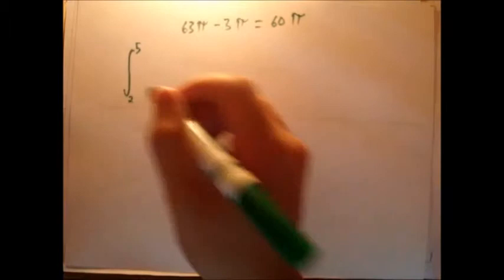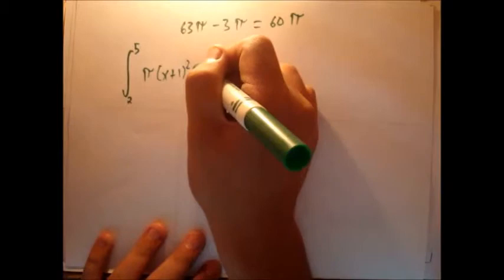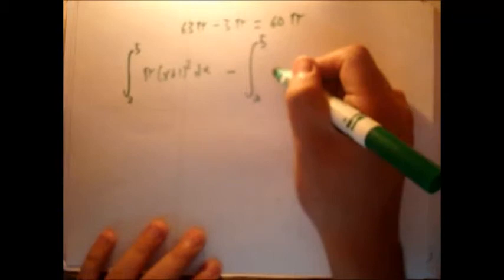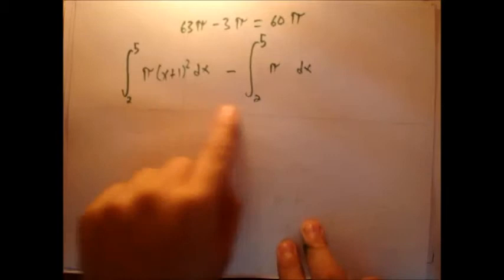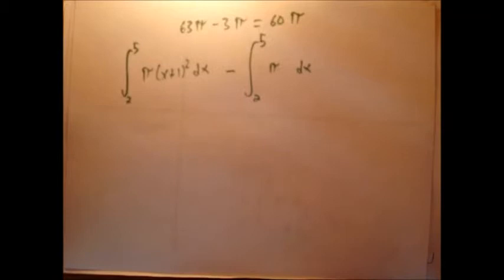x plus 1, we have square of the radius squared dx, right? And then we have to subtract, same intervals, just pi dx. Well remember, when you're adding or subtracting integrals from the same bounds, no matter what's in the inside, we can actually join them together and just subtract what they had on the inside.